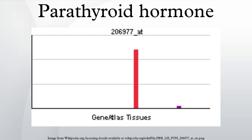Regulation of PTH secretion: secretion of parathyroid hormone is controlled chiefly by serum Ca2+ through negative feedback. Calcium sensing receptors located on parathyroid cells are activated when Ca2+ is elevated. The G-protein coupled calcium receptors bind extracellular calcium and may be found on the surface of a wide variety of cells distributed in the brain, heart, skin, stomach, C cells, and other tissues. In the parathyroid gland, high concentrations of extracellular calcium result in activation of the Gq/G-protein coupled cascade through the action of phospholipase C.